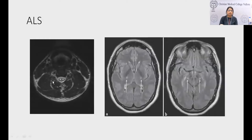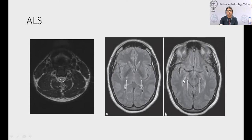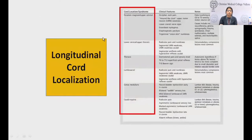In ALS, spinal imaging shows the snake-eye or owl-eye appearance. Certain disorders, even when presenting as myelopathy, involve the full CNS with both brain and spinal cord involvement. The T2 FLAIR axial of an ALS patient shows hyperintensity of the corticospinal tracts in the crus cerebri and posterior limb of the internal capsule — so relevant brain imaging must also be ordered.